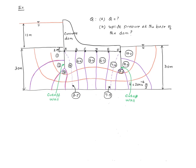This flow net happens to consist of a fractional region. Sometimes this happens — you start sketching from one side and from the other side, and wherever you meet, you may not meet at a whole region. In this particular case, this region happens to be 0.4 of the corresponding whole region, so I have a total of 10.4 drops.